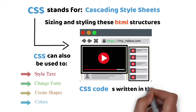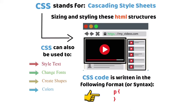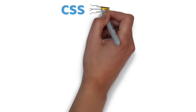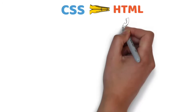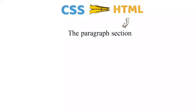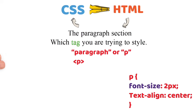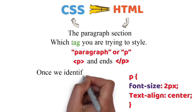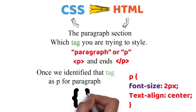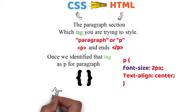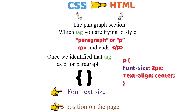CSS code is written in the following format or syntax. CSS goes hand in hand with HTML. For example, the paragraph section that we made in HTML can be modified with CSS. The first step is to identify which tag you are trying to style — the tag, for example paragraph or P, is identified first. Once we identify that tag as P for paragraph, then with an open and closed curly bracket, we can go on to change things like font, text size, and its position on the page, etc.